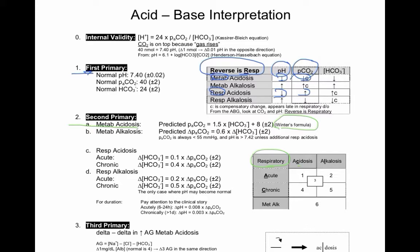C comes before L because you're looking at a second primary. Acute comes before chronic, just chronologically. Then fill in the blanks with 0.1, 0.2, 0.3, 0.4, and 0.5. That will give you all the factors you need to predict the change in bicarb relative to the change in CO2.